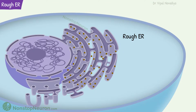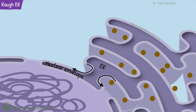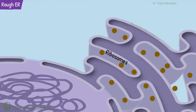Now let's see the rough endoplasmic reticulum in more detail. It's like many flat vesicles connected to each other. Its membrane is continuous with the outer membrane of the nuclear envelope. The space inside the endoplasmic reticulum is continuous with the space between the two membranes of the nuclear envelope. The outer surface of the rough endoplasmic reticulum contains ribosomes — it's the ribosomes that give this part of the endoplasmic reticulum a rough appearance.